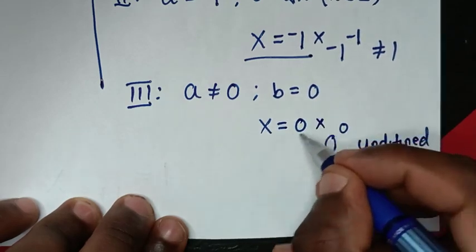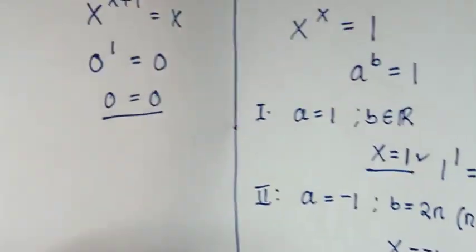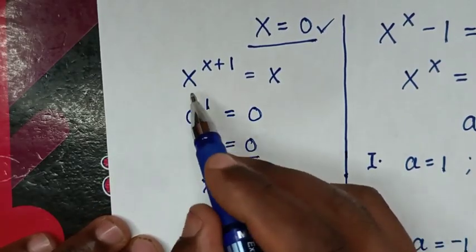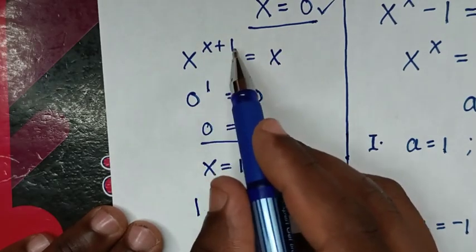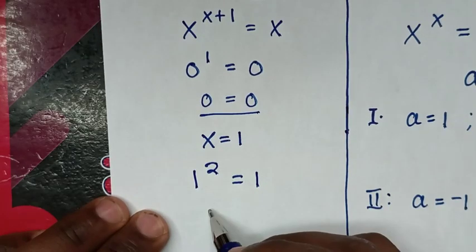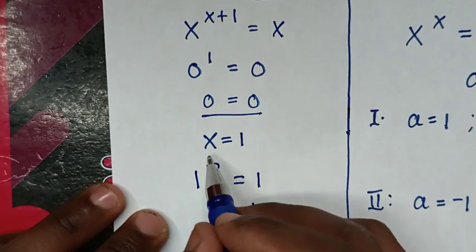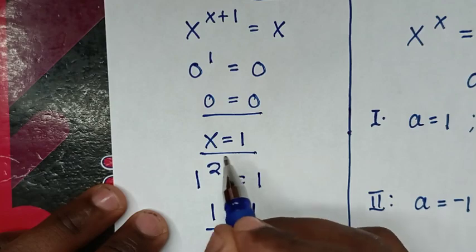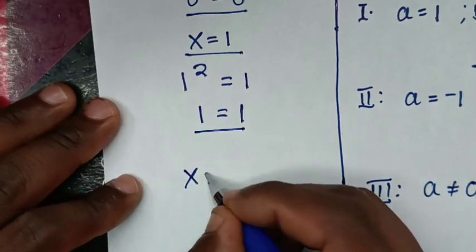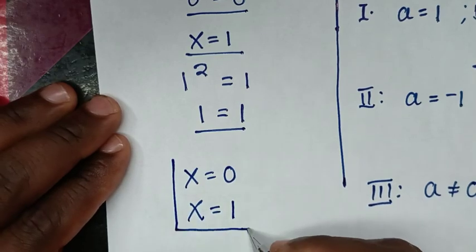So this condition is not possible. Therefore, checking x equals 1 in the original equation: 1 power of 1 plus 1 is 1 power of 2, which equals x, which is 1. And 1 power of 2 equals 1. Left side and right side are equal, so it is true for x equals 1. Therefore our solutions are x equals 0 and x equals 1. These are our final answers.